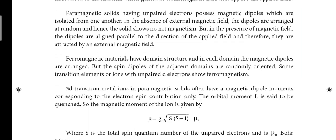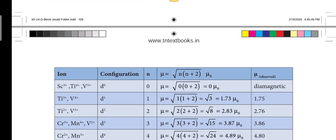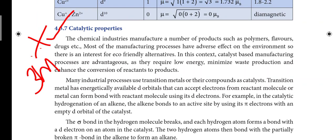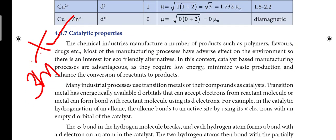Next, go to page 109. Sometimes a 2-mark question asks: how will you derive the spin-only magnetic moment formula? The formula is: μ = 2√(n/2)(n/2 + 1) μB. That derivation has 3 steps — write those steps. Next, page number 110: catalytic properties is a very important heading. The question is: explain the catalytic properties of transition metals, also called D block elements.